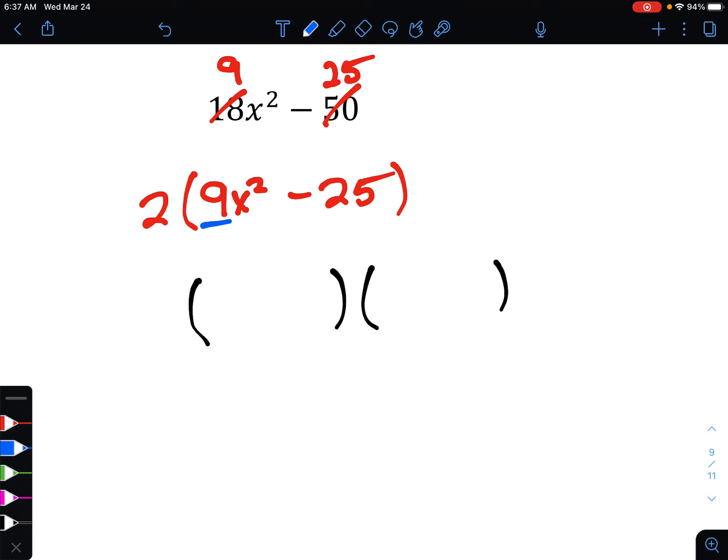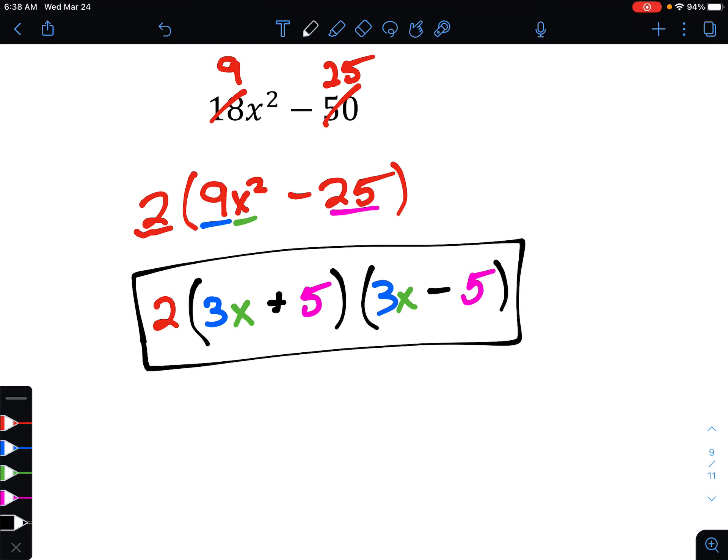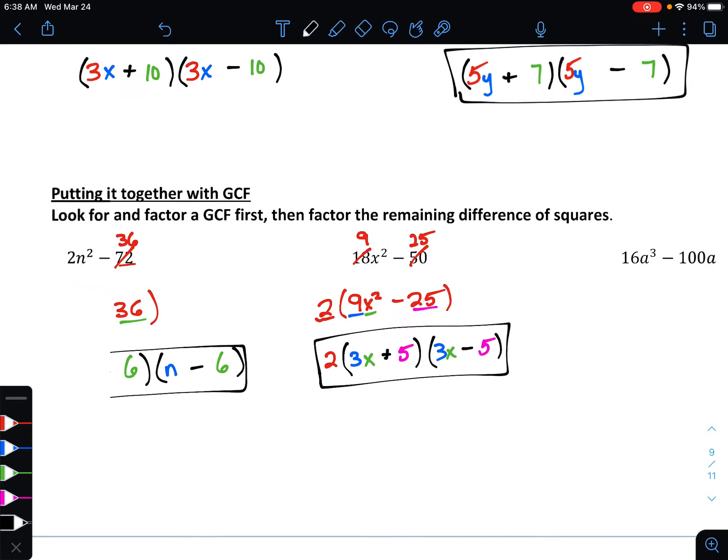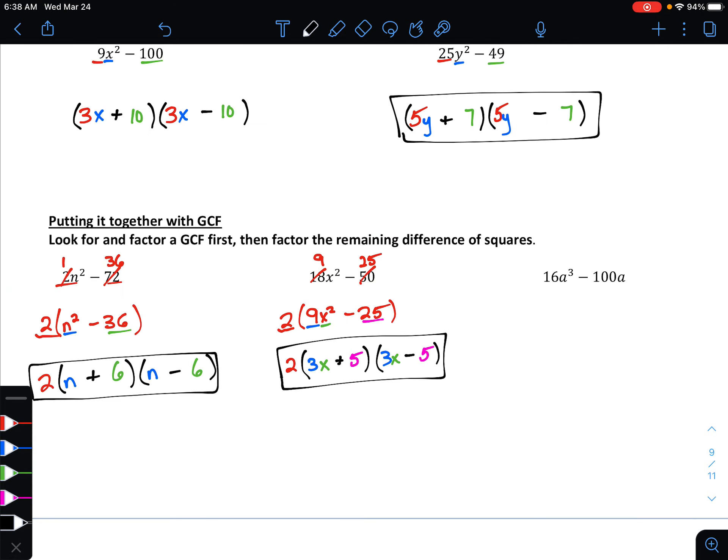At this point, what's left inside the parentheses, it does look like is going to be a difference of squares. Again, let's go piece by piece. For the 9, that would be 3 times 3. For the x squared, that would be x times x. And for 25, that would be 5 times 5. Again, make sure that one of the signs is plus, the other one is minus. And make sure that that 2 that we factored out at the beginning goes at the front of our answer, and we're done.